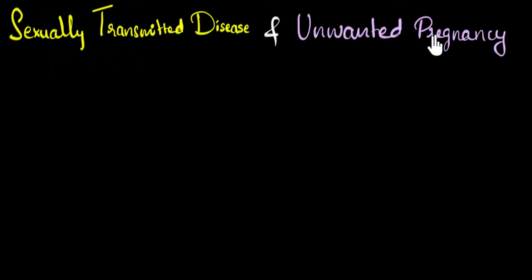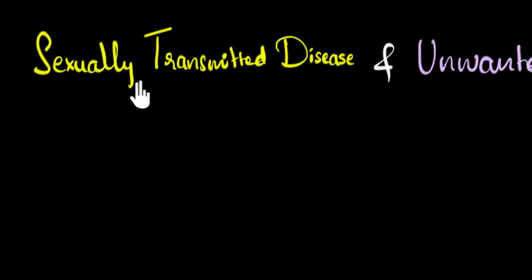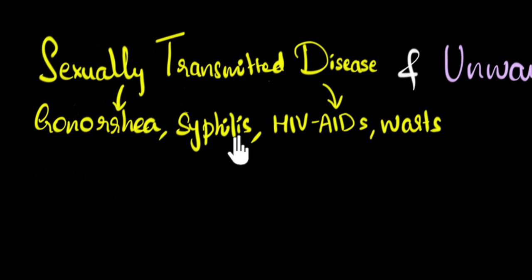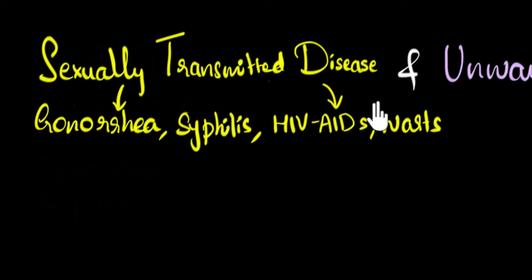Unwanted pregnancy — just because our bodies are sexually mature doesn't necessarily mean that we are ready for the responsibility of a baby, so there could be so many reasons we wouldn't want one. And STDs, as the name suggests, are diseases which are transmitted due to sexual intercourse. This happens because during intercourse there's an exchange of bodily fluids between the people involved. Examples include gonorrhea and syphilis, caused by bacterial infection, and AIDS and warts, caused by viral infection — AIDS being one of the most dangerous ones.